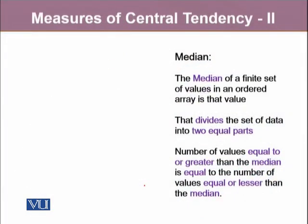The median of a finite set of values in an ordered array is a value that divides the set of data into two equal parts. The number of values equal to or greater than the median is equal to the number of values equal or lesser than the median.